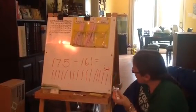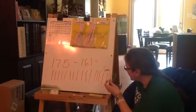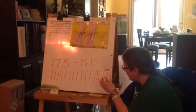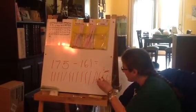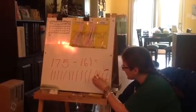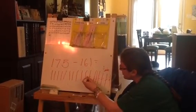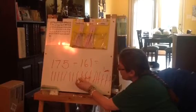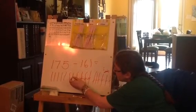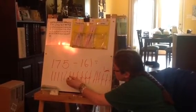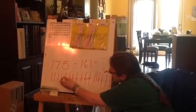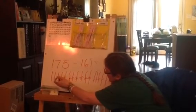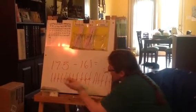Then I need to take away 60: 10, 20, 30, 40, 50, 60. And then I have to take away 100: 10, 20, 30, 40, 50, 60, 70, 80, 90, 100.